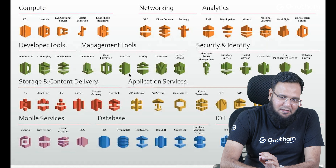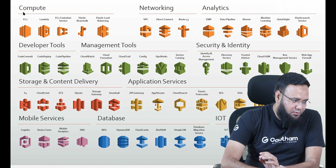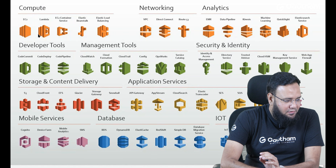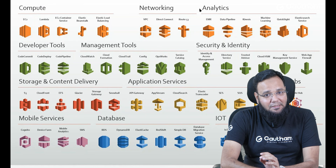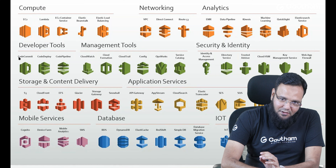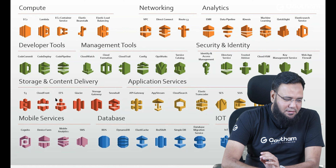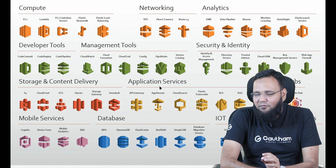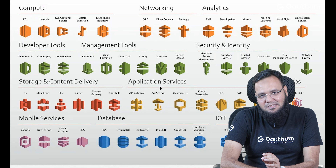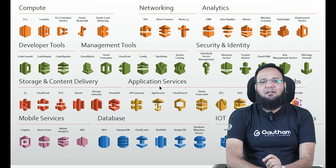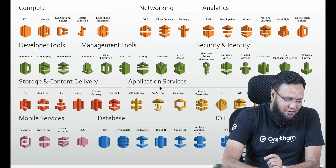Very few services I can show you in this slide out of 300. For compute, you have EC2, Lambda, Container, and so many others. Same way, you have network services, analytics services, developer tools, management tools, security and identity, storage and content delivery and so on. For every need of the end user, they provide one service. You just name it and you find a service available on AWS. That's the real beauty of working with cloud.